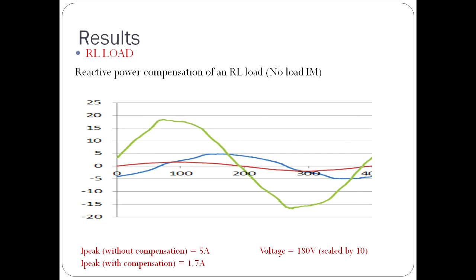Let us now look into the results obtained from the UPQC setup, starting with the shunt active filter. The first result is on an RL load — an induction machine running on no load. The voltages and currents have been scaled down to make it visually appealing. The current drawn by the induction motor is shown in blue; as you can see, it is not in phase with the voltage. But after the shunt filter response, the current shown in red is in phase and of lesser magnitude. Hence, the reactive power compensation of the shunt active filter has been proved.